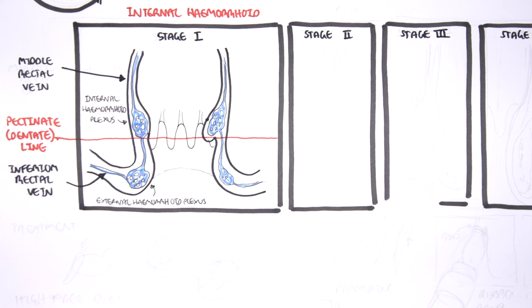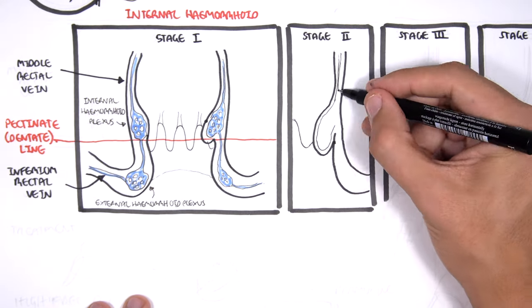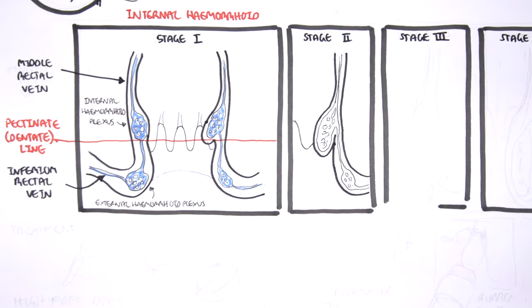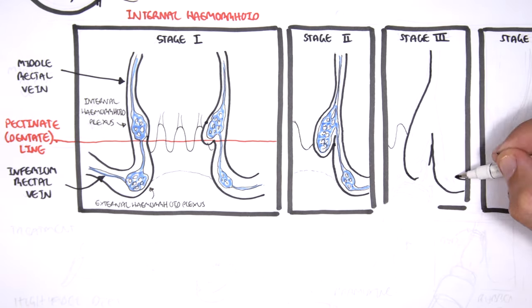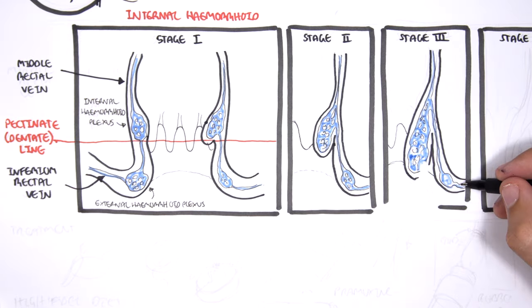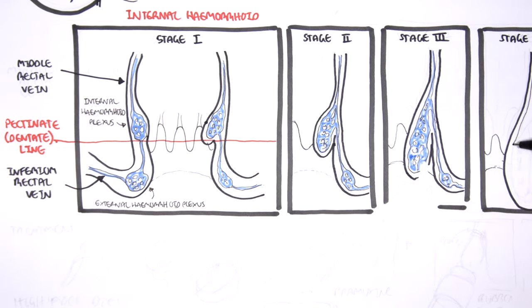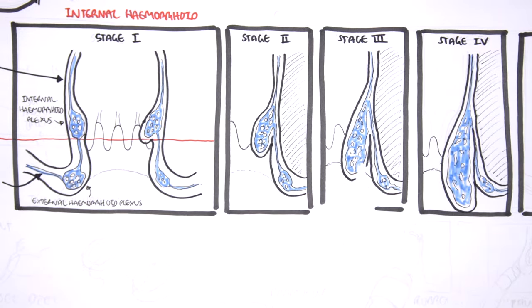The internal hemorrhoids, stage 1, there is slight enlargement of the internal hemorrhoid plexus. Stage 2, the hemorrhoid can go past the pectinate line. Stage 3, further protruding down where it is visible in the anal sphincter. And stage 4 is where the hemorrhoid has fully protruded out.